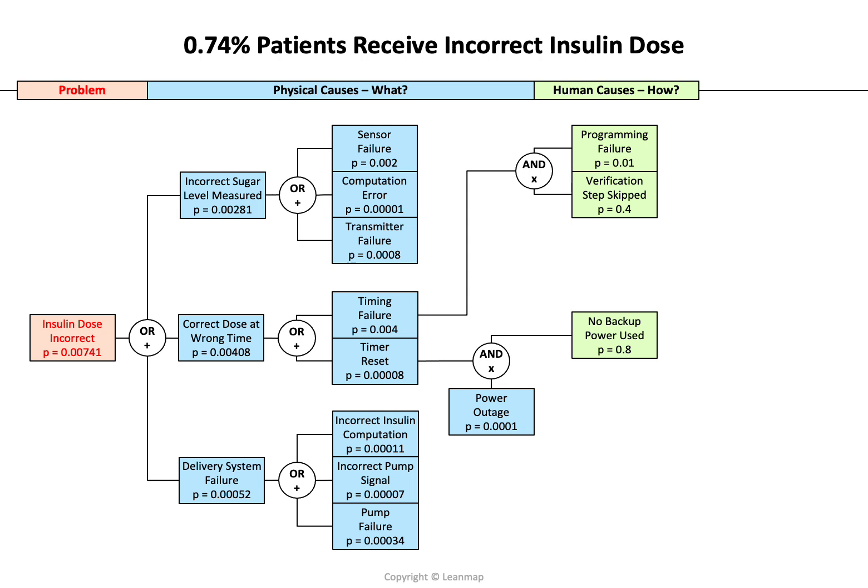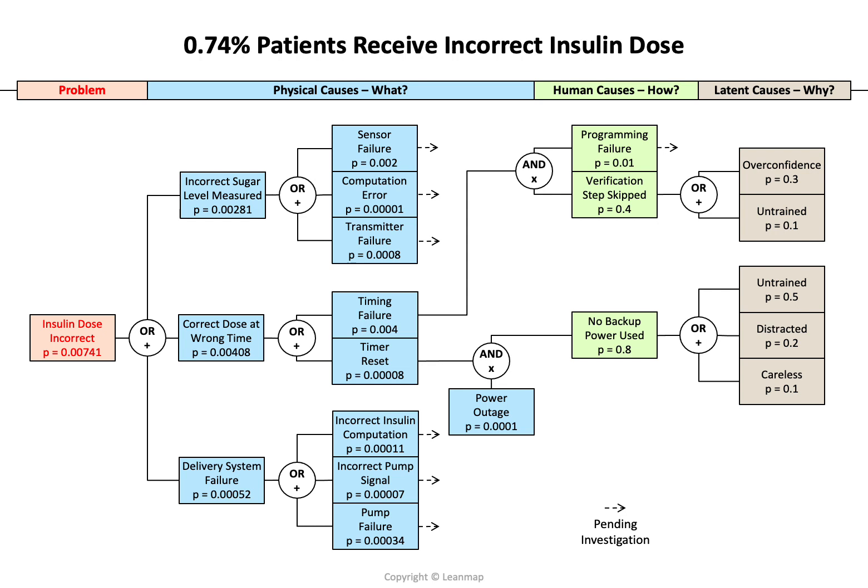Let's analyze the human causes — how did that happen? The timing failure was caused by a programming failure and the verification step was skipped, so the program was not tested. The timer reset happened because of a power outage that we cannot control, but there was no backup power prepared. For the latent causes: the verification step was skipped because of an overconfidence error — the engineer was too confident it would work without testing — or the person was untrained. And no backup power was used because the person was untrained, distracted, or careless.